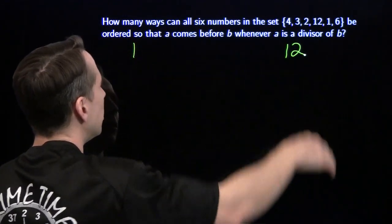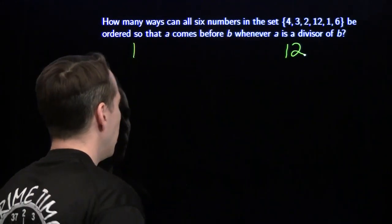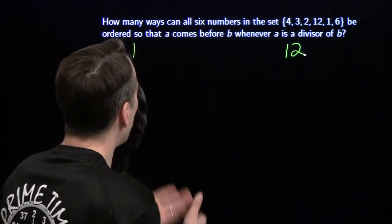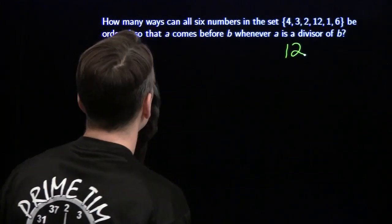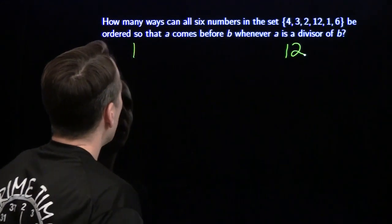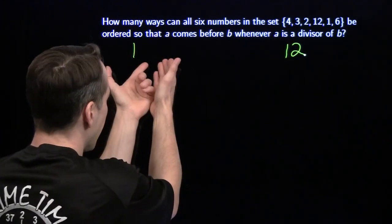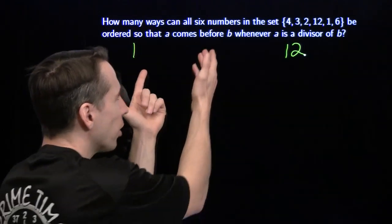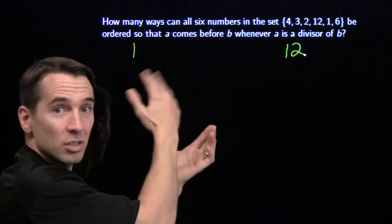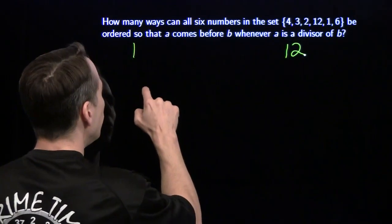Now we just have to figure out how to count the ways to put the other 4 numbers in the middle. We could list out all the possibilities and then check them, but that doesn't sound like fun. So instead let's think about how we'll make this list. What's next — the second number in the list? We can't put the 4 next because 2 has to come before 4. So 4 can't be next. 6 can't be next either because 2 and 3 have to be before 6. So the only numbers that could be next are 2 and 3.